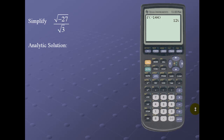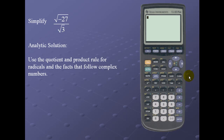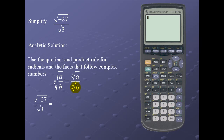Let's divide √(-27) by √3. We'll use the quotient rule and the product rule for radicals, then apply the facts for complex numbers. The quotient rule states: the nth root of (a/b) equals the nth root of a divided by the nth root of b. For our example, √(-27) / √3 — we combine them to get √(-9), apply the product rule, then use the complex number facts for a result of 3i.